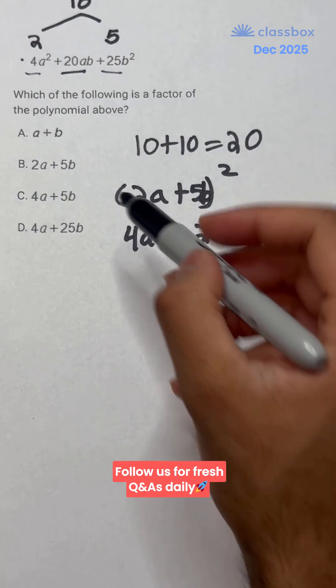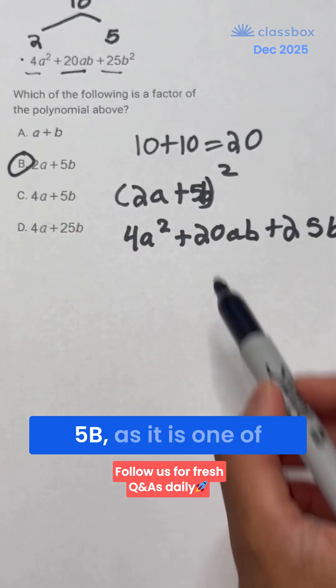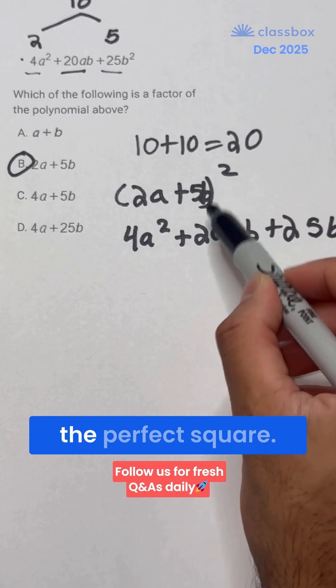But yeah, so our factor, or one of the factors, would be 2a plus 5b, as it is one of the factors in the perfect square.